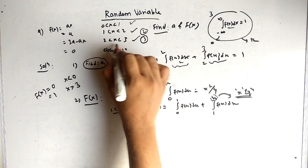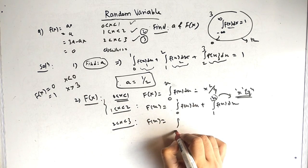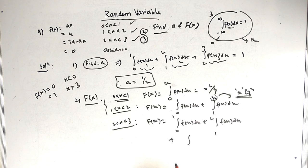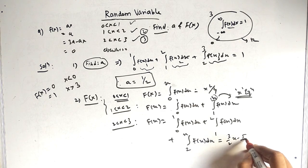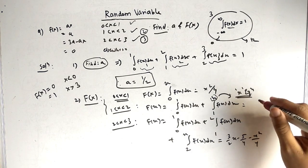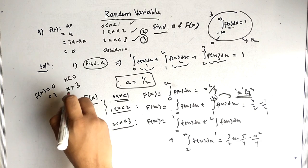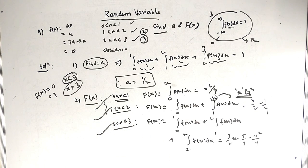For the third domain, x in [2,3]: we add both previous integrals. So F(x) = integral from 0 to 1 of f(x) dx, plus integral from 1 to 2 of f(x) dx, plus integral from 2 to x of f(x) dx. The answer for this domain is 3x/2 minus 5/4 minus x²/4. The second domain answer is x/2 minus 1/4. This completes finding a and the full F(x).